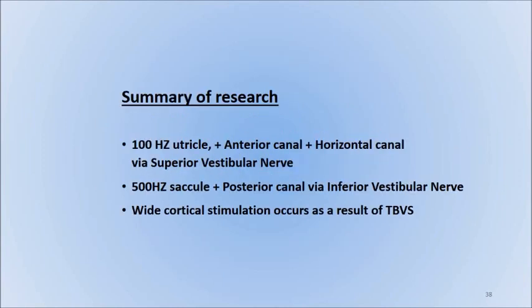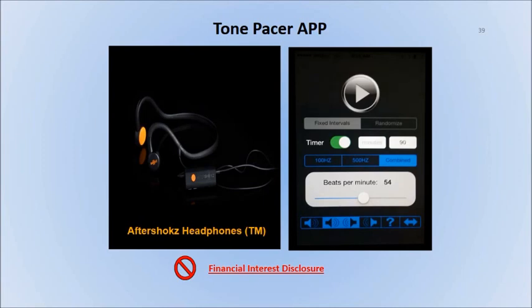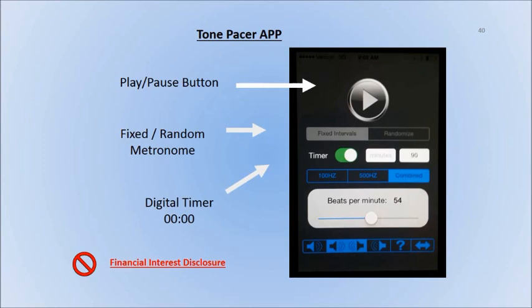Here's a quick summary of the research: a 100 Hz tone is preferential for the utricle plus the anterior canal plus the horizontal canal via the superior vestibular nerve, and 500 Hz tones preferentially activate the saccule plus the posterior canal via the inferior vestibular nerve. All these tones activate a wide area of the cortex related to vestibular function. Now let's take a look at the app we developed to manipulate tones and the vestibular system. In the interest of full disclosure, I do make profit from the sale of this app. I do not make profit from the bone conducting headphones — we recommend AfterShokz headphones. The name of the app is called Tone Pacer. It's a basic design with a pause/play button, a fixed versus random metronome-type function, and a digital timer.